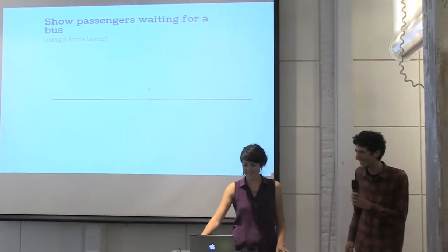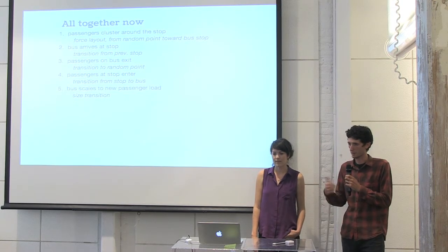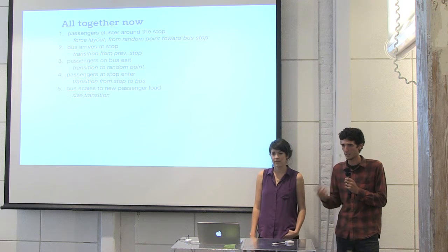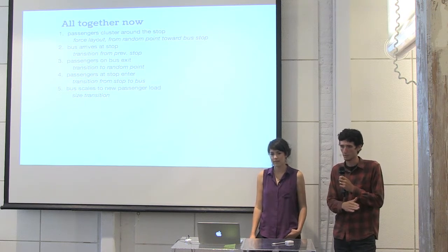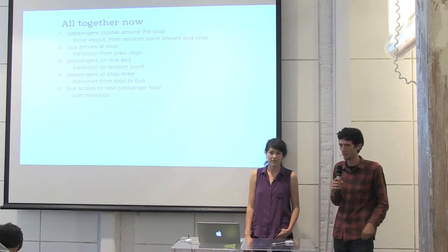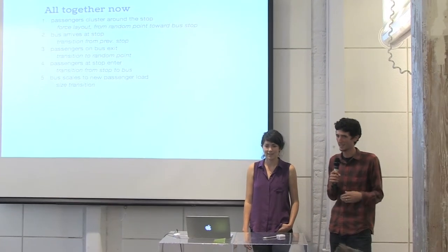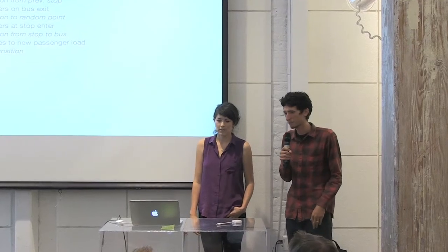Bringing it all together: for a bus moving along and arriving at a stop, passengers cluster around the stop via the force layout, and the bus arrives on a timed transition from the previous stop. One key quirk with JavaScript timers is that if you ever want to change the route, you have to cancel all remaining timers — clear everything out — otherwise your UI breaks. When the bus stops, everyone who needs to exit does so, then waiting passengers board, and the bus scales to the new passenger load.